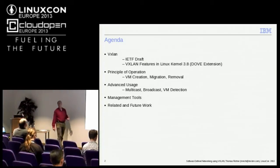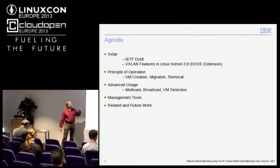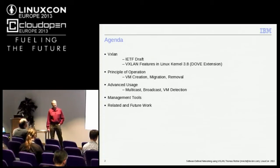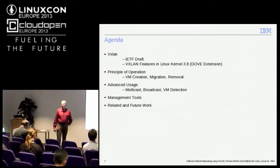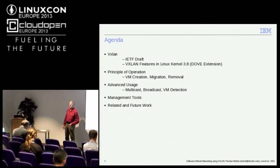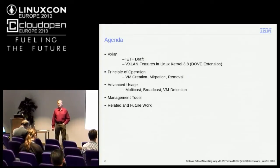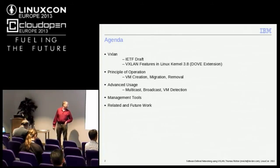I'll show you a little bit about the VXLAN details, which we need for the next item: principle of operation. We'll go through a few examples on how we create, migrate, and delete virtual machines. We'll also go through advanced usages like multicast, broadcast, and detection of VMs. Finally, we'll talk about the management tools we need to get the most benefit from our VXLAN-defined networking. At the end of the session, I'll have a few words about related work and future work.